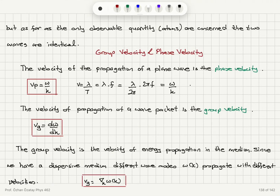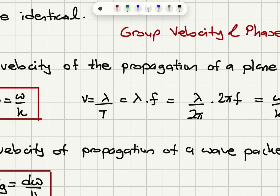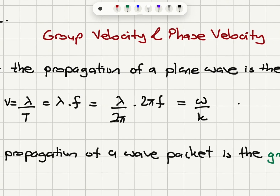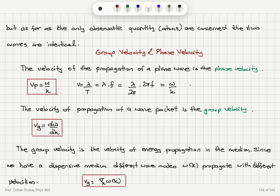Another important concept in these elastic waves is group velocity and phase velocity. When we talk about the propagation velocity of a plane wave, this is the phase velocity. It's the ratio ω/k. The propagation speed of a wave is its wavelength divided by its period, or wavelength multiplied by its frequency. Dividing and multiplying by 2π gives λ/2π times 2πf; 2πf is ω and k is 2π/λ, so it will be ω divided by k. So indeed this is the propagation speed of the wave.